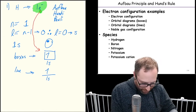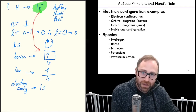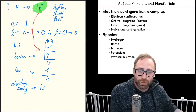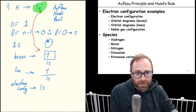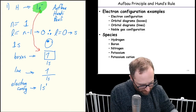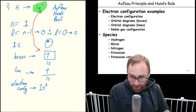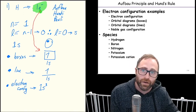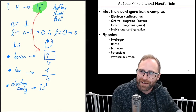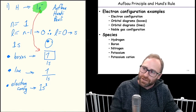Hund's rule dictates spin — whether we put it spin up or spin down. Since we only have one electron, it's going to be spin up. The Pauli exclusion principle says you can't have the same four quantum numbers, but it doesn't matter here because there's only one electron. So we put our one electron with a half-arrow spin up. The electron configuration is written as 1s¹. Hydrogen won't have a noble gas configuration because it's too small.